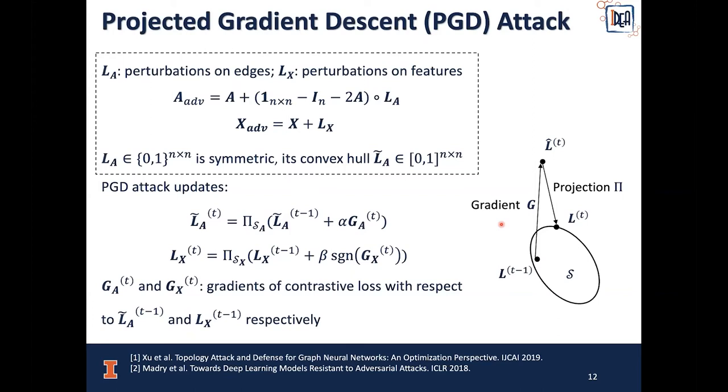PGD attack is an iterative attack method. For each time step t minus 1, we have the perturbation L and we derive the gradient of the contrastive loss with respect to the current perturbation and add them together. Finally, we project this total amount to a local ball defined by delta_A and delta_X, which makes the perturbations in every direction not too large.